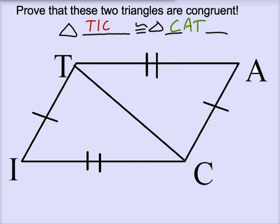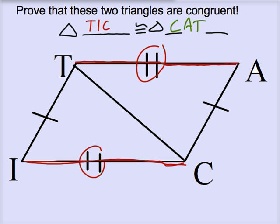I see I've got one pair of segments. Let's call this I, C. I, C and A, T must be congruent because they both have these two pairs of congruence marks on them. And likewise, this segment T, I is going to be congruent to segment A, C.